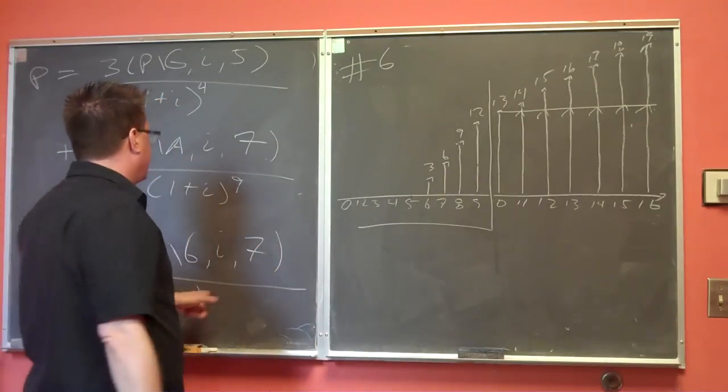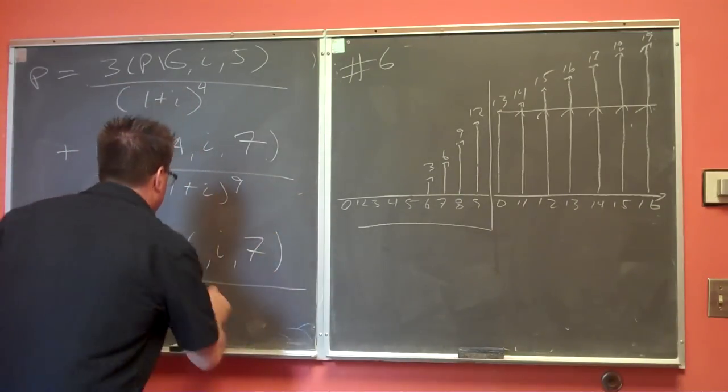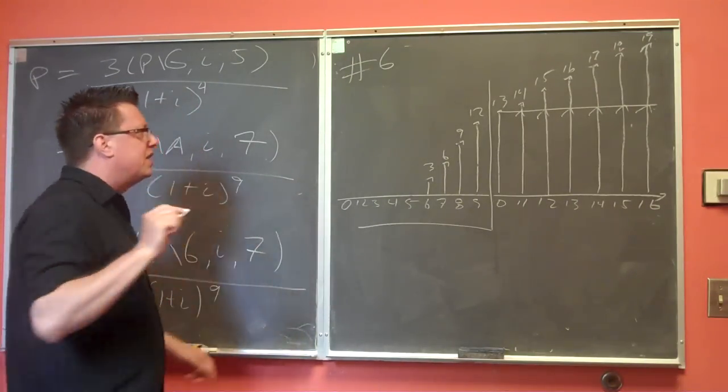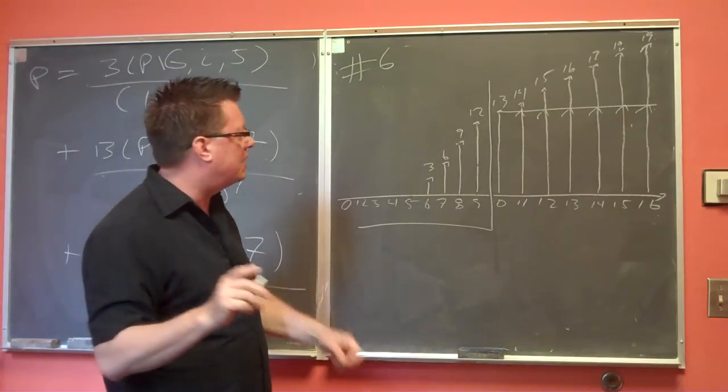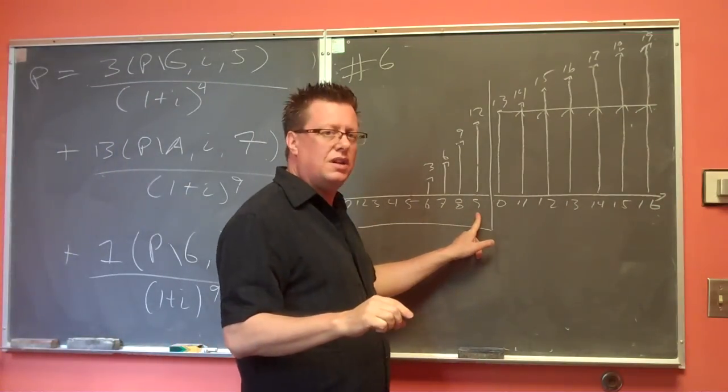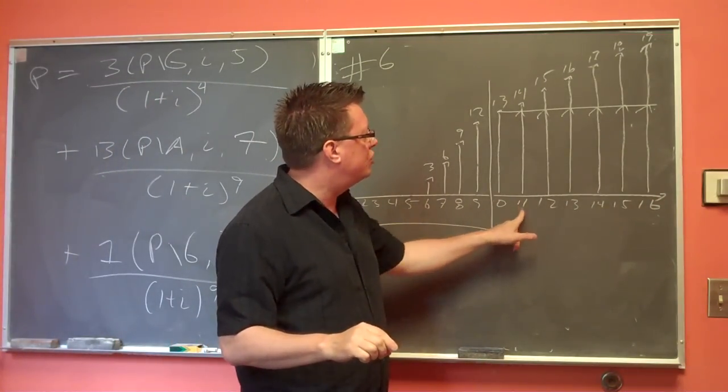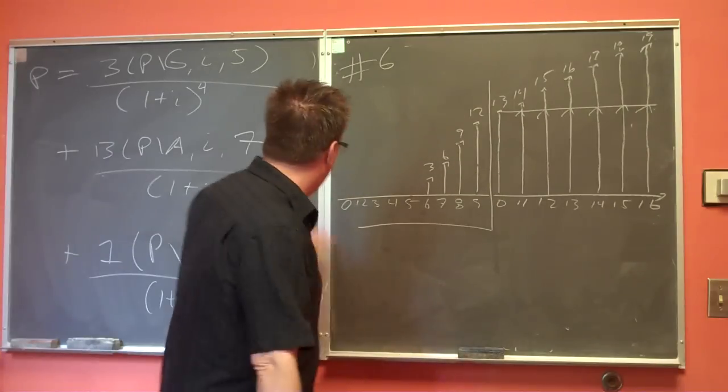And then what you've got to do is you've got to figure out how it's time-shifted. And my suspicion is that a 9 makes sense. And if you think about it, here's time period 0, here's time period 1, 2 is the first time when you see a value, and we're all done.